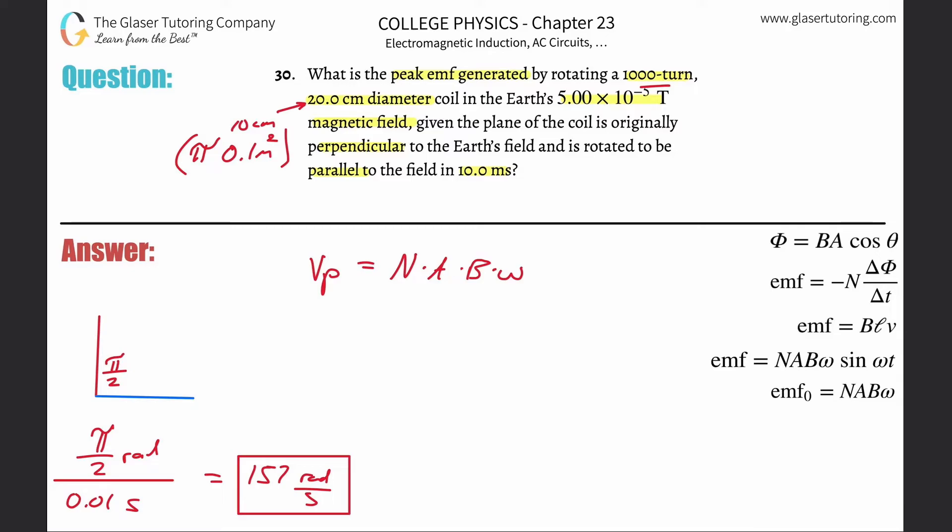And all we now need to do is basically take this and plug it in. And plug everything else in. So here now, the peak voltage is going to be equal to the number of turns, which was 1,000. The cross-sectional area, we already talked about how to calculate that, right? So it's going to be pi times then 0.1 squared.